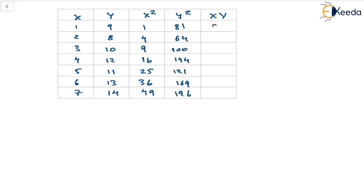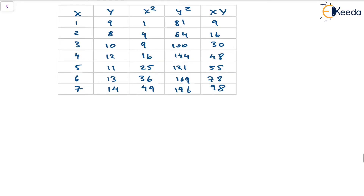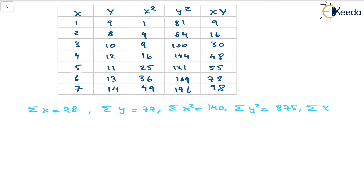The column xy will contain 9, 16, 30, 48, 55, 78, and 98. From here we can find the summation values: summation of x = 28, summation of y = 77, summation of x² = 140, summation of y² = 875, and summation of xy = 334.